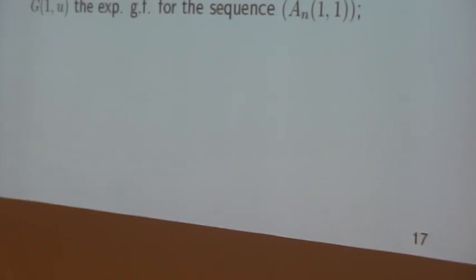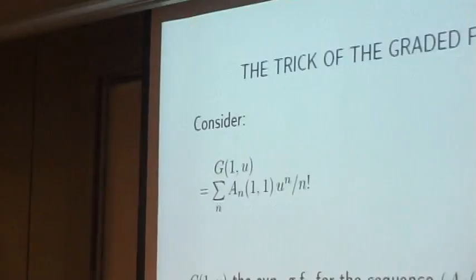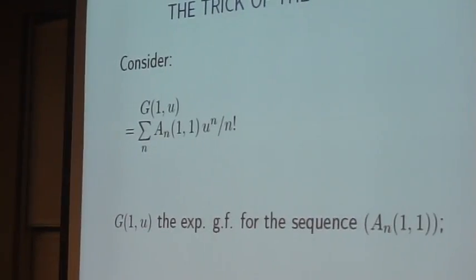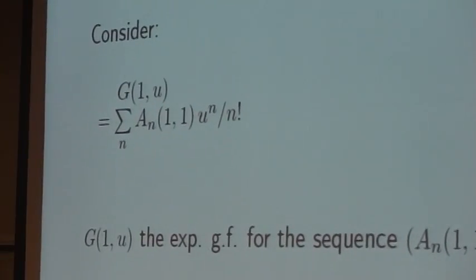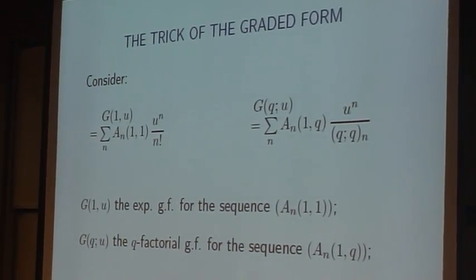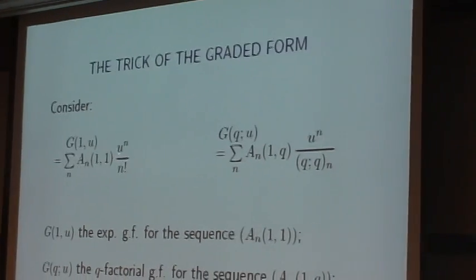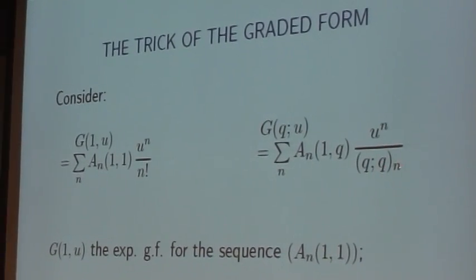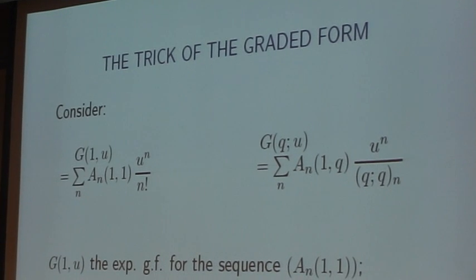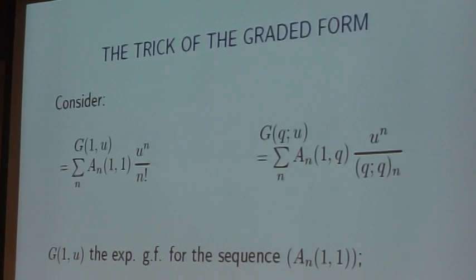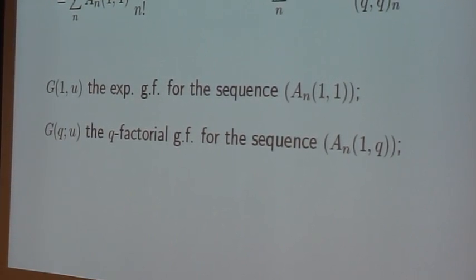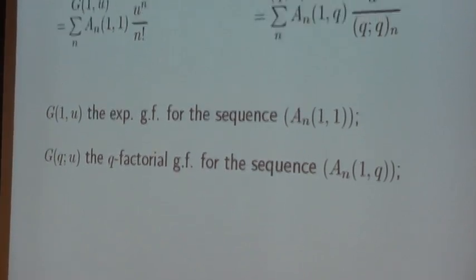Now let me explain what I mean by the trick of the gradient form. Suppose we have an exponential generating function for integers. Let me call them A_n of 1, and then we have another one like this, which is a Q factorial. This is normalized by N factorial. This is going to be normalized by Q_n. One with Q times, one with Q squared times, one with Q to the n. We like to know how to go from this one to that one. This is banal, but this is a principle to guess what kind of formula we have to look for. We like to see how we can go from this expression to that expression.